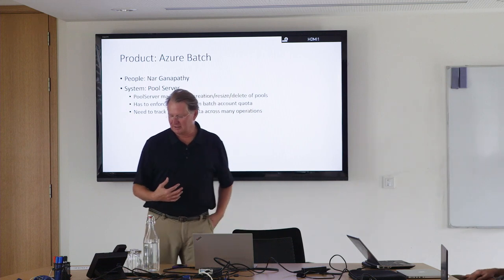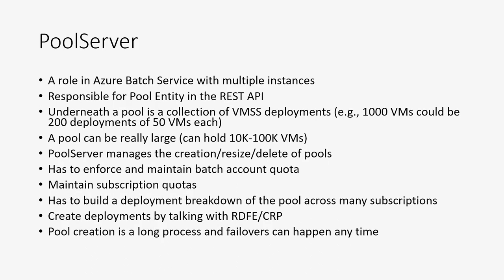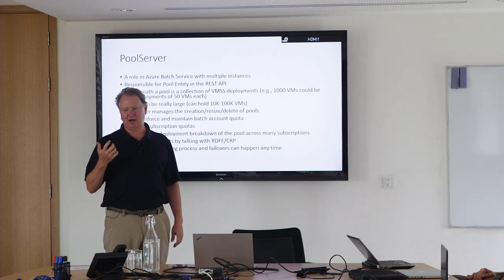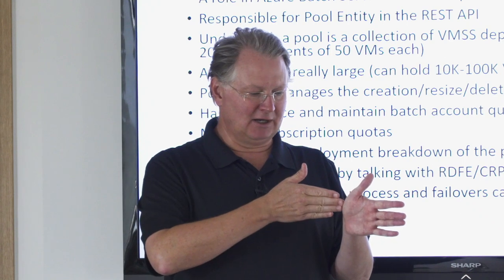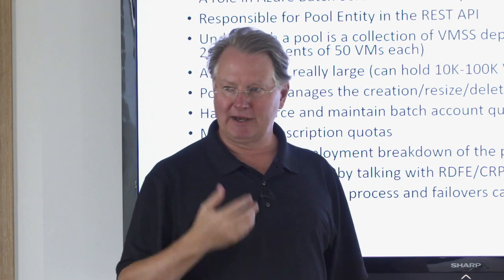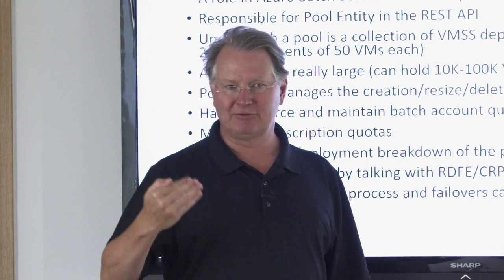The next spec is Azure Batch. It was written by Nargana Pathy, who is an architect, and it is a specification of the pool server. Azure Batch: if you have one executable and you want to run 10,000 or 100,000 copies of it — a good example is rendering a movie. You've got some animated film and you want to render every single frame. Each one is a separate independent process; you fire it up, give it its initial data, and let it go. So it's kind of a massive compute service where they're all doing exactly the same thing.